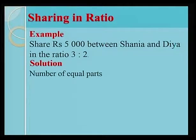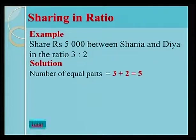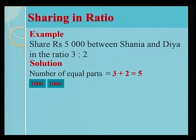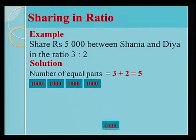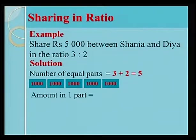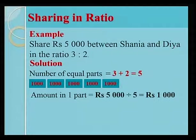Number of equal parts. 3 plus 2. We have 5 equal parts. 5 equal parts of 1,000. Which we have obtained by dividing 5,000 by 5.